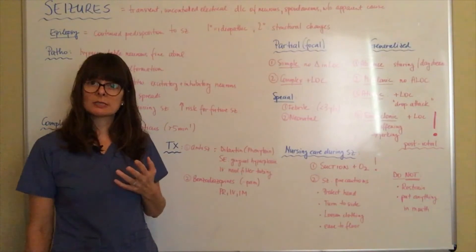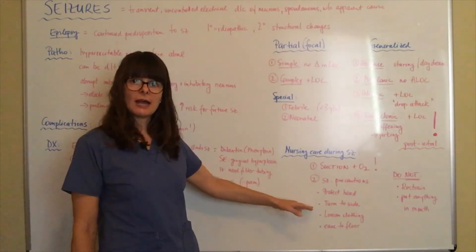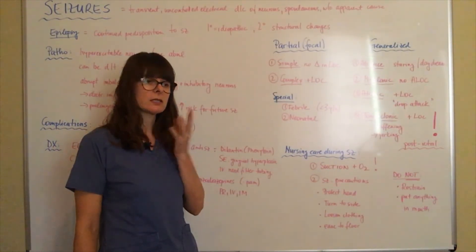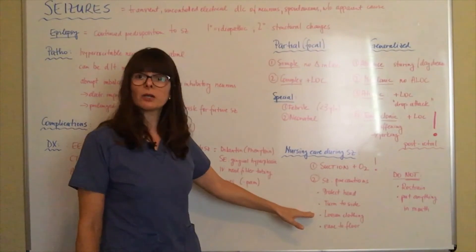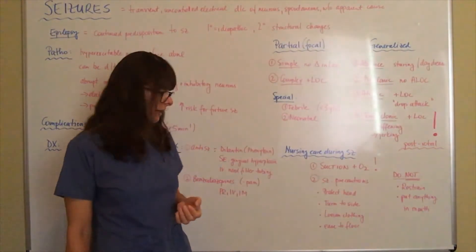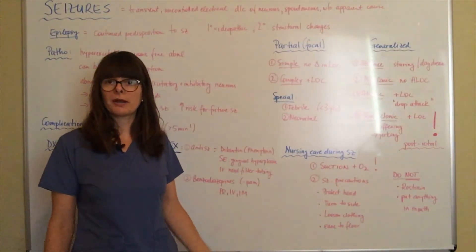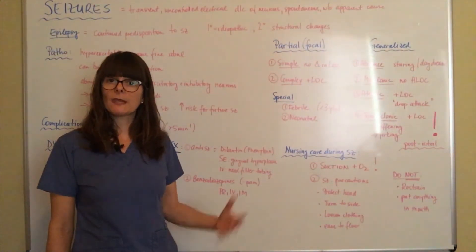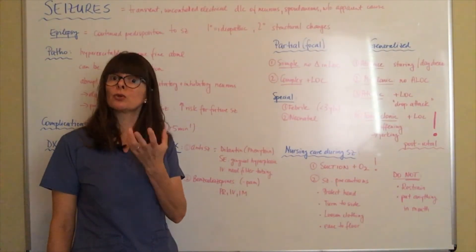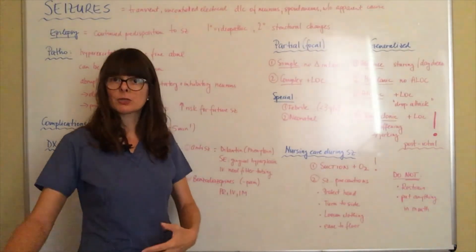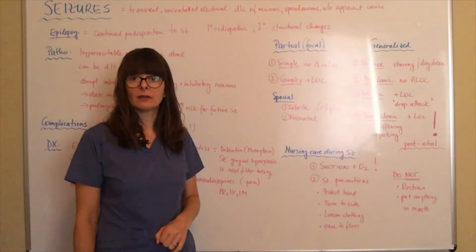If the patient is experiencing this tonic-clonic seizure, we want to make sure we protect their head to protect them from injury. We want to turn them to the side so that any kind of secretions or blood from biting their tongue doesn't just go straight down their airway, but rather kind of moves out to the side. We want to loosen their clothing so that they're not constricted and choking on any clothing item. And we want to ease them to the floor. This is something that could happen, for example, if you're at an airport or anywhere in the general public where all of a sudden somebody's having a tonic-clonic seizure. Let's say this is somebody who's wearing a tie. You want to make sure that you loosen their clothing and then gently ease them to the floor and then turn them to their side so their airway can be protected and hopefully will protect them from having any kind of injuries.